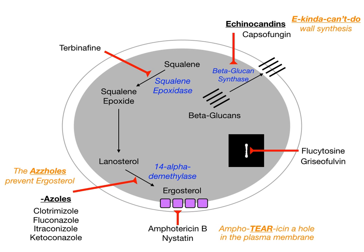For the azoles: the azoles prevent ergosterol. I always used to say these are the 'asshole drugs' — they really mess with the fungal cell. 'Azoles' and 'ergosterol' kind of rhyme if you say it the right way: 'the asshole will prevent ergosterol.' They're the first-line agents given for fungal infections, and they all end in '-azole.'